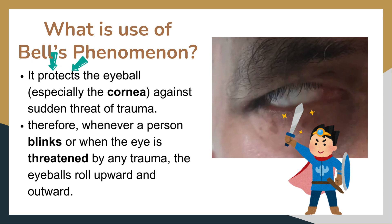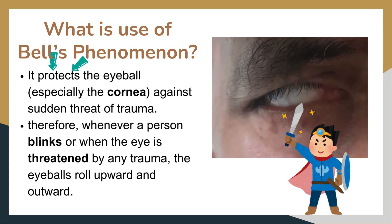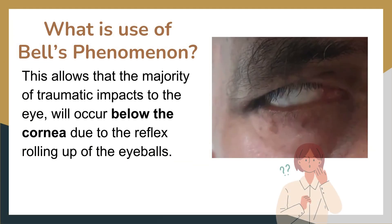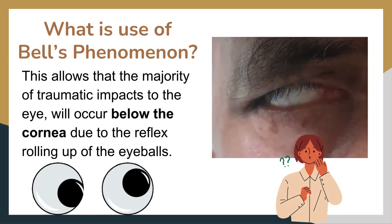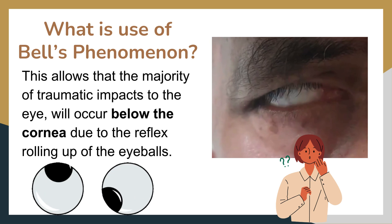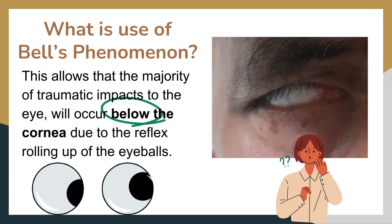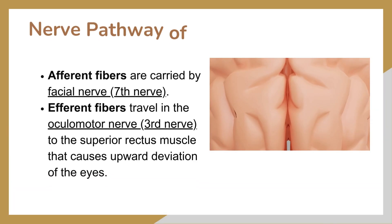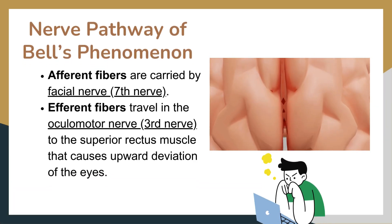It protects the eyeball, especially the cornea, against sudden threat of trauma towards the eye. Therefore, whenever a person blinks or when the eye is threatened by any trauma, the eyeballs roll upward and outward. This ensures that the majority of traumatic impacts to the eye will occur below the cornea due to the reflex rolling up of the eyeballs.